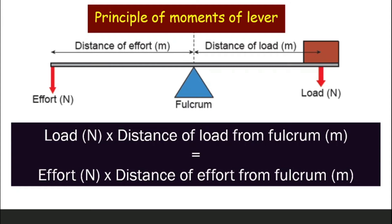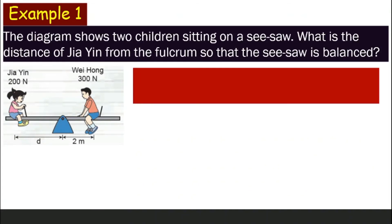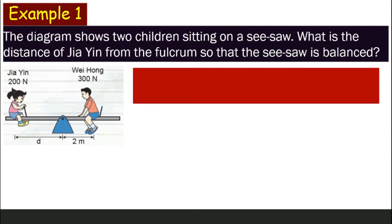Let's look at an example. Two children are sitting on a seesaw, which is a lever. The question asks: what is the distance of Jia Yin from the fulcrum if the seesaw is balanced? We are given that Wei Hong weighs 300 newtons and is 2 meters from the fulcrum, and Jia Yin weighs 200 newtons. We need to find Jia Yin's distance from the fulcrum.